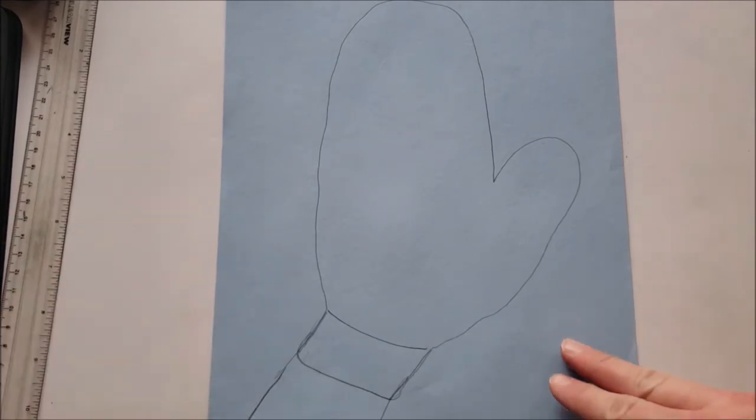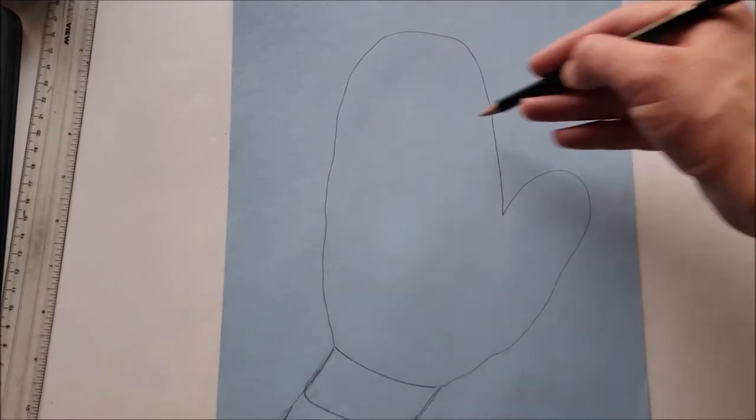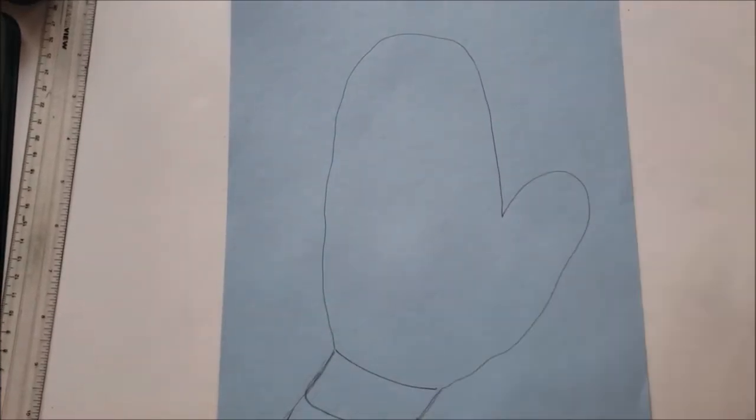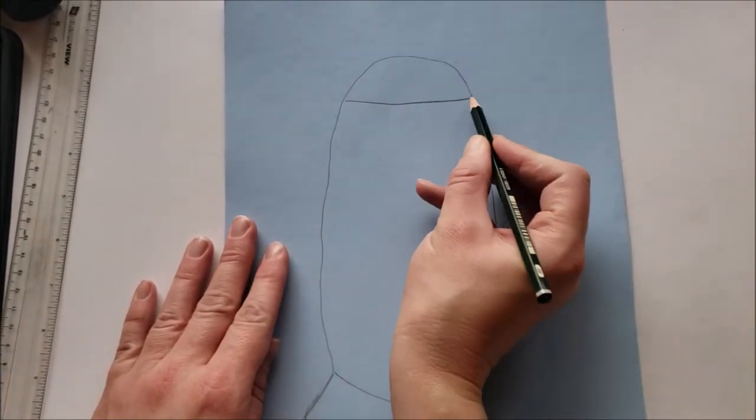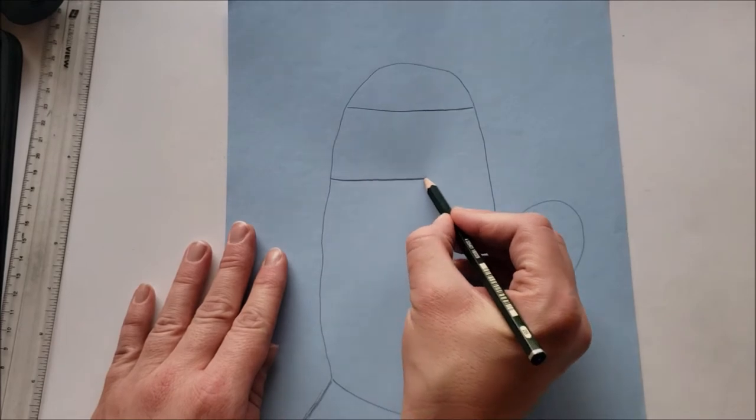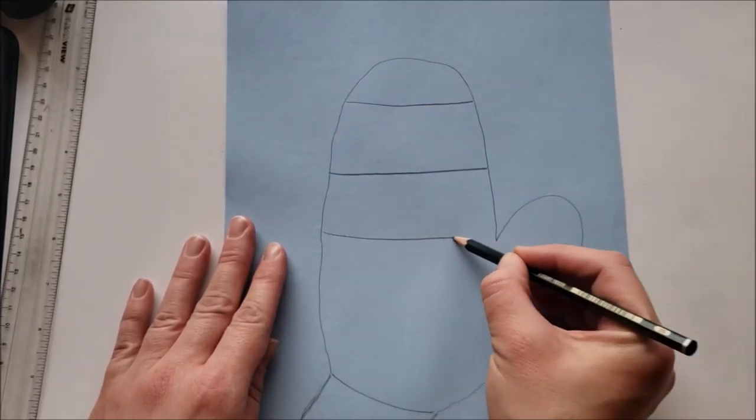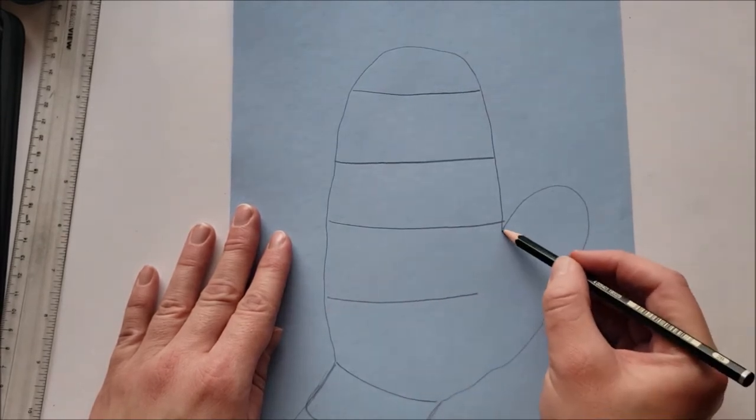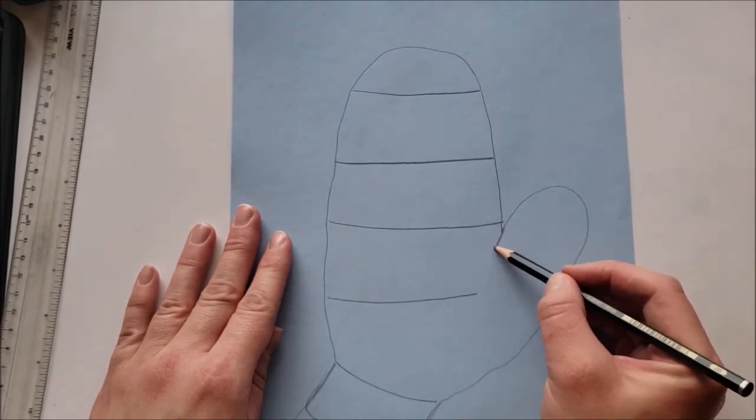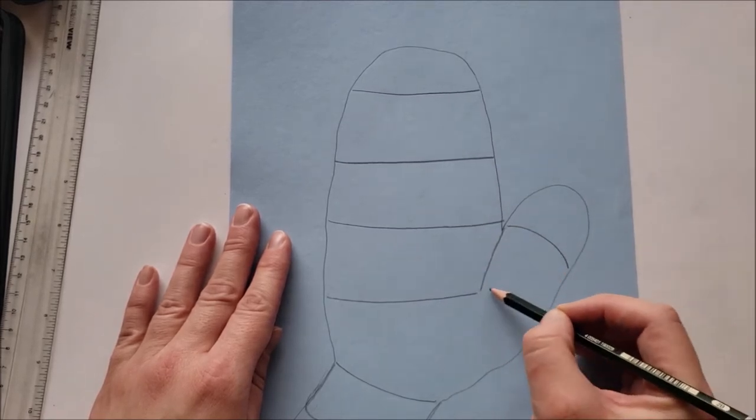Now this would not be a very interesting mitten if we left it like this. So what we're going to do is divide this mitten up into some different spaces so that we can do some patterns. So I'm going to do mine with stripes, and I'm going to make sure they're nice wide stripes so I have room for some cool patterns inside. And when I get down to the mitten thumb area, maybe I'll draw some stripes this way too.